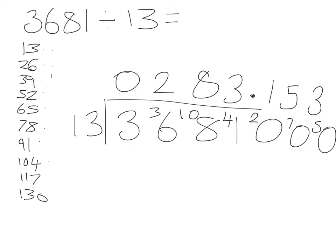And if I look at the end, I'm going to just give 2 decimal places. And I can leave this 5 as a 5 because the 3 is less than 5. So, 3681 divided by 13 will be 283.15.